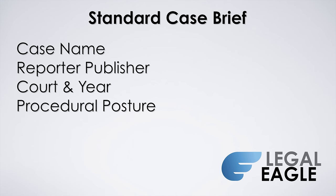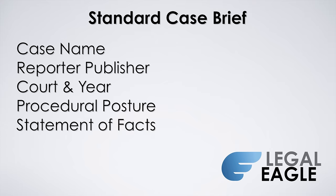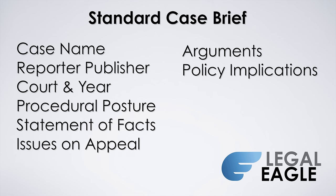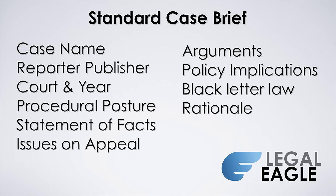It should also include the history of the case — a discussion of where it came from — the statement of facts, the narrative story of the case, the issues that were decided on appeal, the arguments on either side, the policy implications of the different ways the court of appeal could have gone, the rule of law or black letter law inductively discerned from the appellate court, the rationale the appellate court used to decide the case, and any particular dissents or concurring opinions.